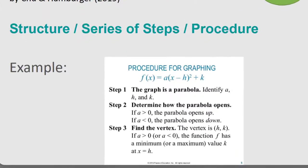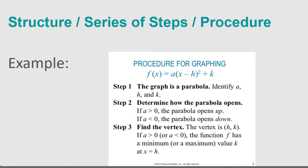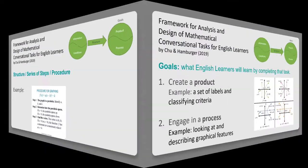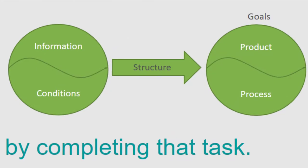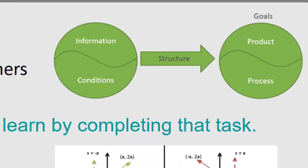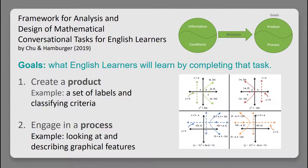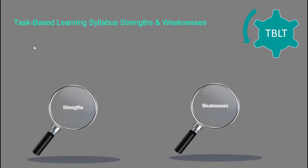To reach its desired task goals, a task may include a well-defined structure or series of steps that students undertake as they complete a task together. Central to any task are its goals — what English learners will learn by completing that task. For example, the goal of a parabola sorting task is to understand which features of parabolas, such as graphs, matter. To attain this goal, students will need to create a product — a set of labels and classifying criteria — while engaging in a process of looking at and describing graphical features.